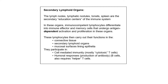Secondary lymphoid organs are lymph nodes, lymphatic nodules, tonsils, and spleen — also called the education centers of the immune system. These lymphocytes become immunocompetent in an antigen-dependent manner, with activation and proliferation in these organs. They then migrate to connective tissue and mucosal surfaces and take part in cell-mediated immunity (by T cells and cytotoxic cells) and humoral responses (from B cells, which also require helper T cells).